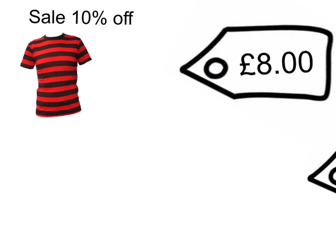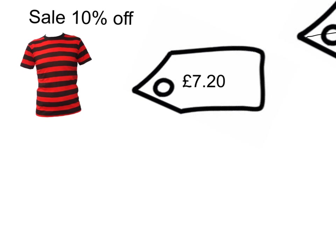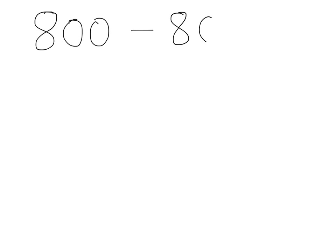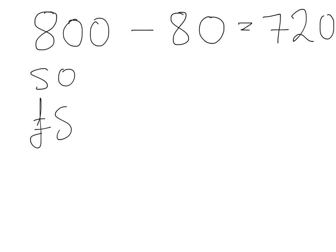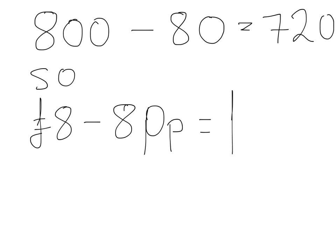A t-shirt costing 8 pounds would no longer be that expensive. The new price would be £7.20. 8 pounds, as we've previously mentioned, is 800 pence. So 800 take away the 80 gives us 720. Therefore, 8 pounds take away the 80 pence gives us a value of 7 pounds and 20 pence.